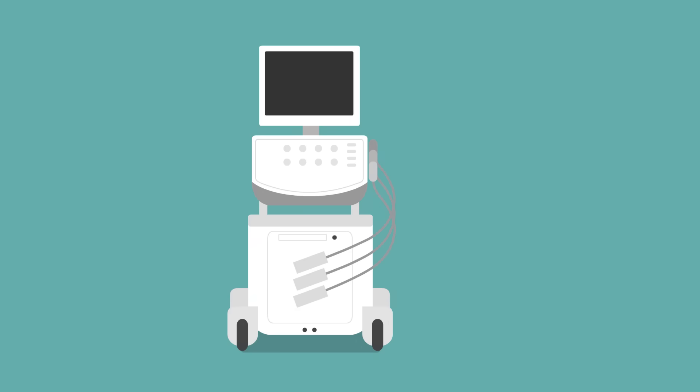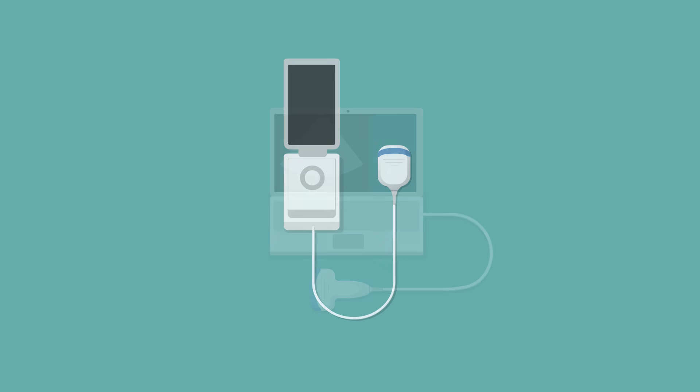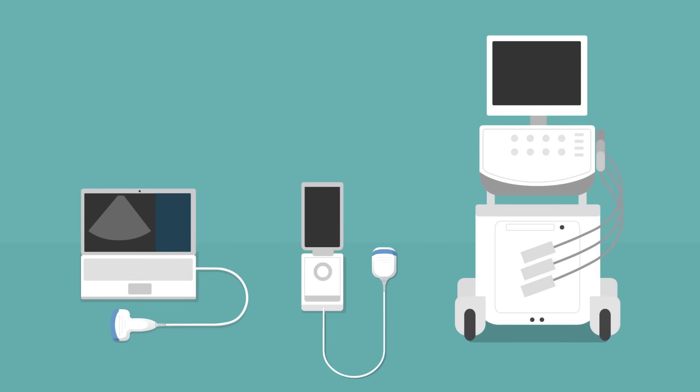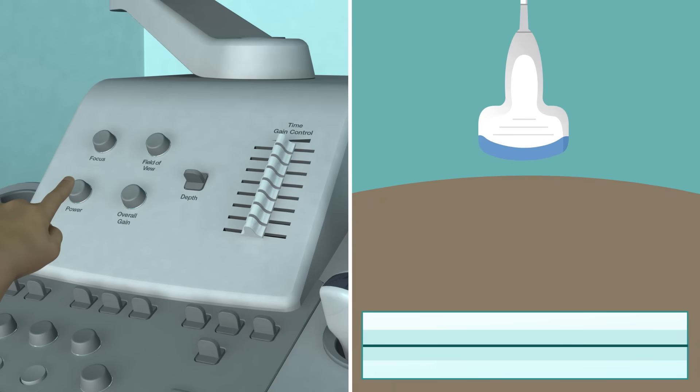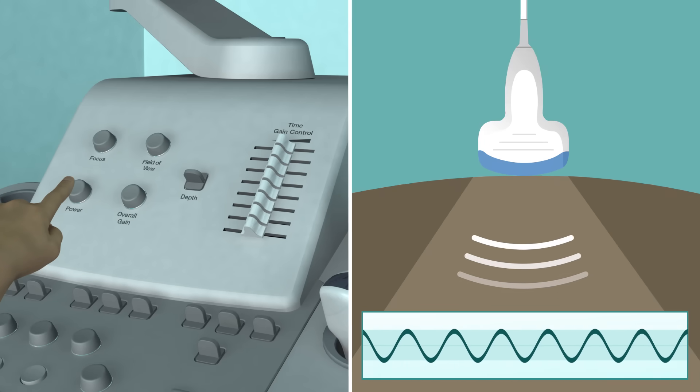Ultrasound scanner units come in a wide range of shapes and sizes, but all have the same basic controls. Using these controls to produce a clear image with the scanner is called knobology. The power of acoustic output controls the strength of the signal produced by the probe.